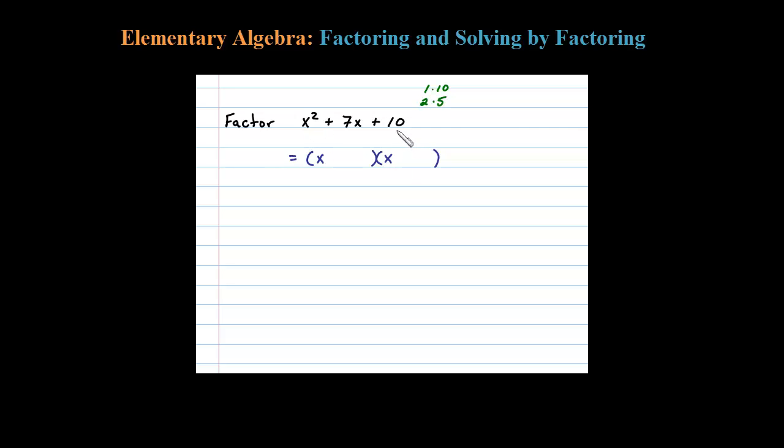Then you look at the last term. We're going to factor 10 as 2 times 5. The last thing is to determine the signs. The signs come from the product of the inner terms and the outer terms. So 2x and 5x add up to positive 7x if both of those are positive.